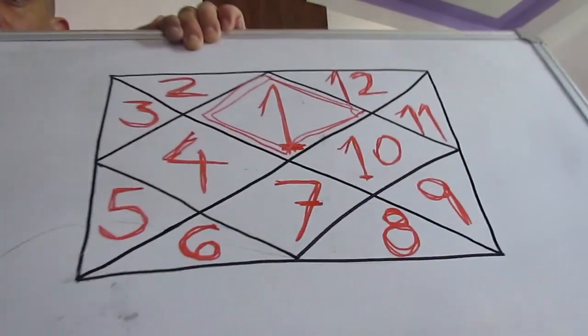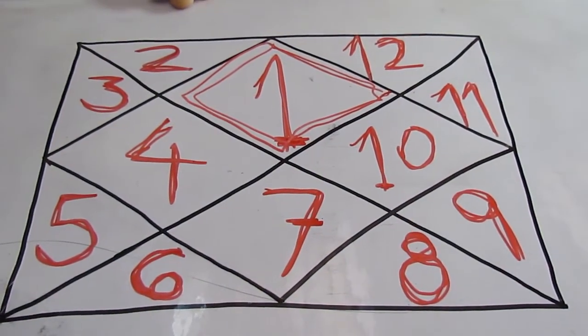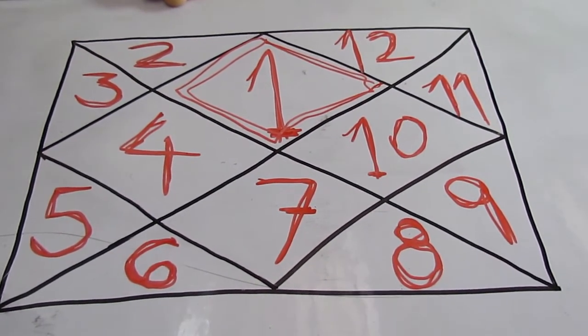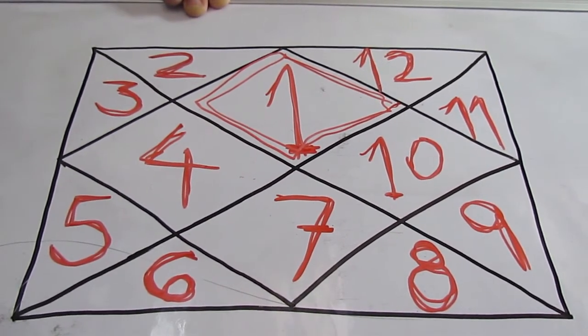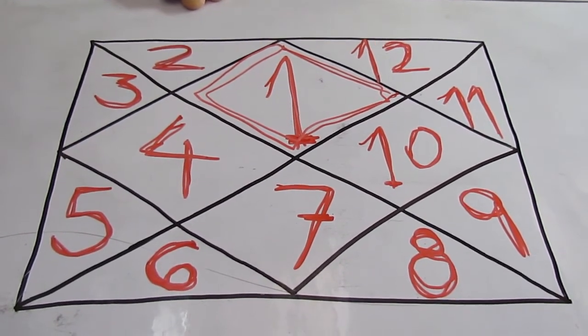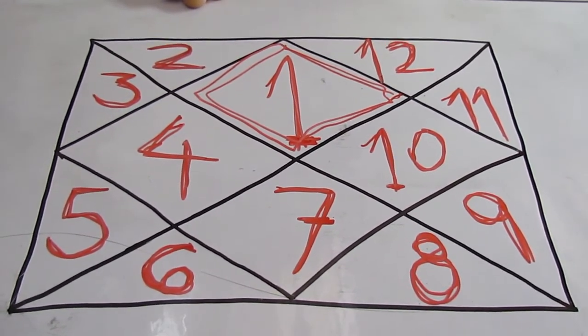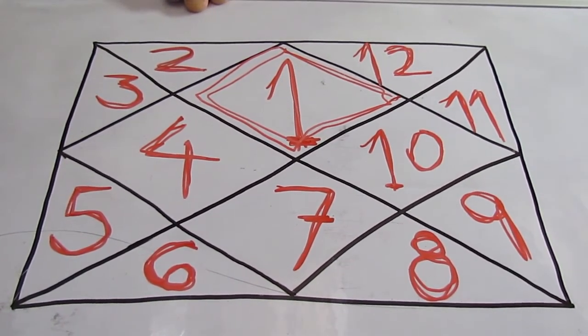Bueno, esto es la carta en astrología védica. Esto es la disposición de las casas astrológicas. Iremos viendo más vídeos. Lo importante en este es que os quedéis con este concepto. El concepto de que la casa uno es el ascendente, la casa siete es el descendente.